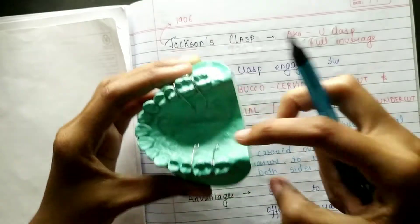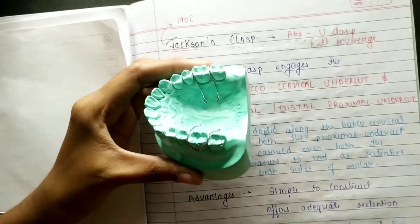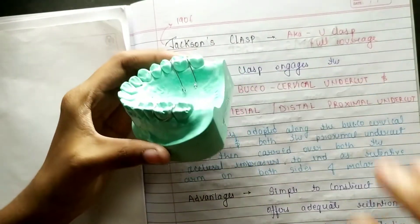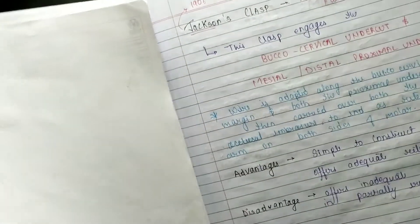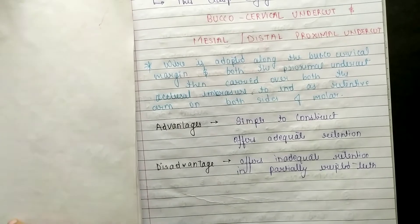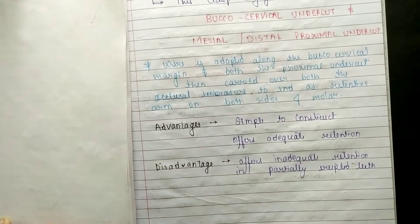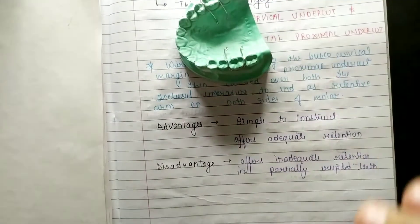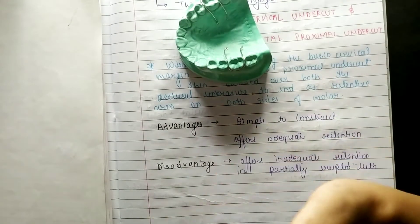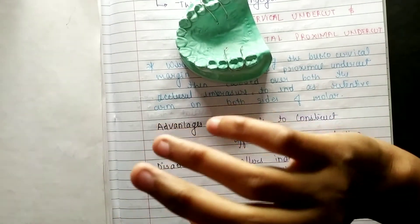It is very easy to construct. When we have C-clasp, then it is one more retentive. So C-clasp, this is the advantage, that it is very easy to construct, it offers adequate retention. And disadvantage again that partially erupted tooth, then it will not be able to provide.